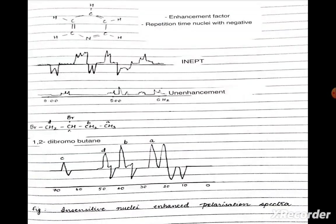Here are two examples of INEPT spectra. The first is benzene: comparing a normal spectrum with an INEPT spectrum, an enhanced and clearer spectrum is obtained using INEPT. The second example is 1,2-dibromobutane, whose spectrum is obtained as shown in the figure. I hope you found this useful, thank you.